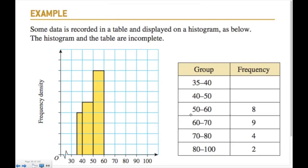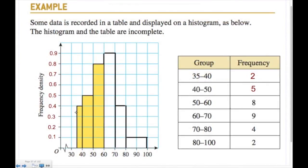The frequency density for the 50 to 60 interval is 8 divided by 10, which is 0.8. So that mark on the axis must be 0.8. Looking at the scale — 1, 2, 3, 4, 5, 6, 7, 8 divisions — each dash must be 0.1. That lets us label the full frequency density axis scale.